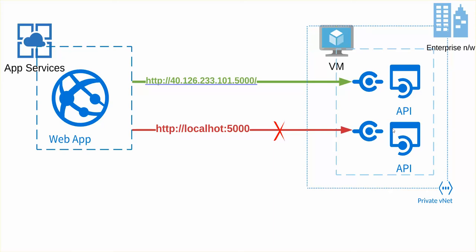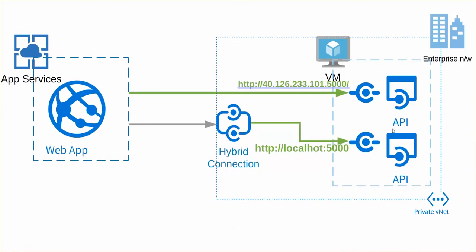The problem statement is quite straightforward: how exactly can we access this localhost 5000 endpoint? The solution is the Hybrid Connection Manager which Microsoft has provided. That helps you make a localhost 5000 request from a web app. In this slide I've shown that the public endpoint is accessible as-is, but when you talk about localhost you bring in this Hybrid Connection Manager, which you install in your enterprise network. Once installed, it makes a connectivity back to the web app hybrid connection setup on the application side.